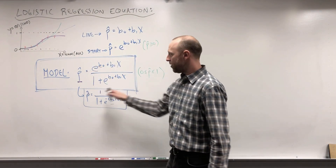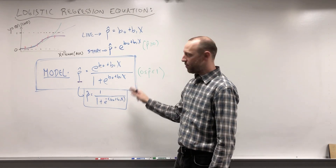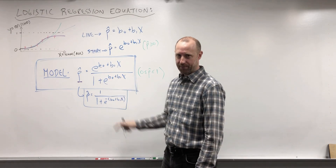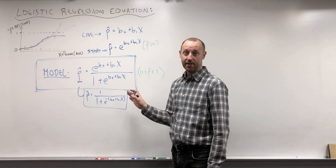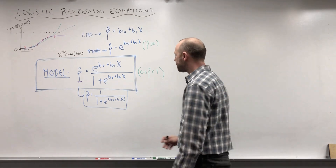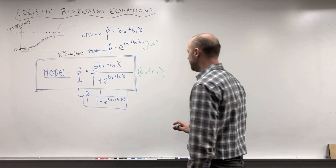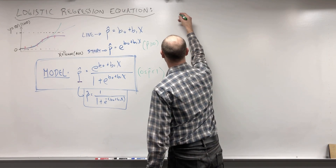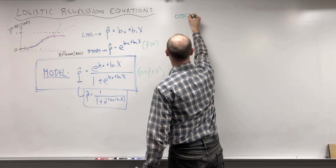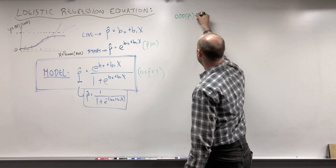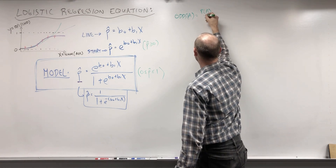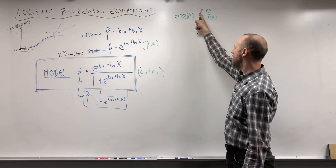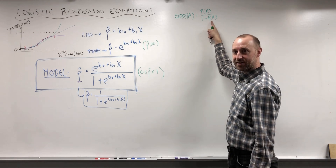Now what I want to do is take this model and rework it a little bit — same model, but change the scale — so that the right-hand side looks like a linear equation, similar to what we worked with in linear regression. To get there, I'll remind you of two things. First, the odds of some event A occurring are the probability that A occurs divided by one minus the probability of A — or equivalently, the probability A happens divided by the probability A does not happen.